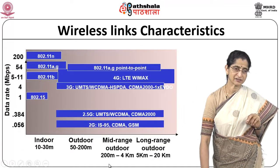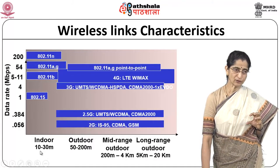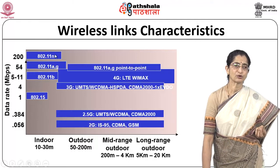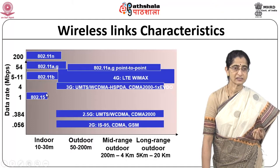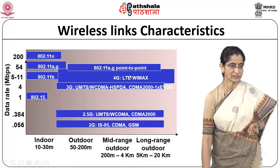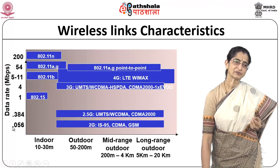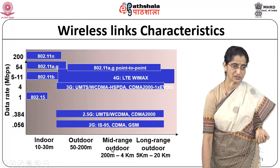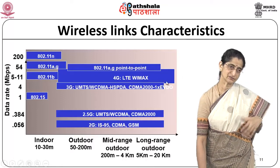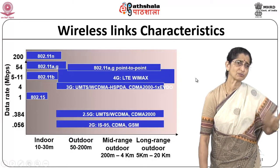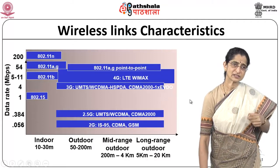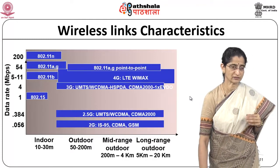Looking at wireless technologies on a comparative scale: for indoor ranges of 10 to 30 meters, protocols like 802.15 (ZigBee) and 802.11 variants (N, A, G, B) operate at different data rates. For cellular technologies, CDMA, GSM, 2G, 2.5G, 3G, and 4G show increasing data rates and coverage from 50–200 meters to up to 20 kilometers as generations advance. New standards continue to emerge as applications demand higher data rates.